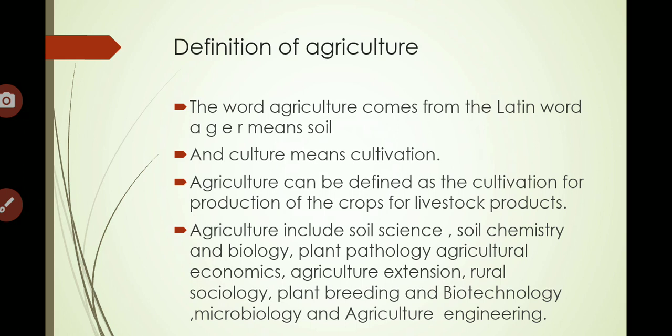Agriculture includes several branches: soil science, soil chemistry, biology, animal husbandry, plant pathology, economics, agricultural economics, agricultural extension, rural sociology, plant breeding and biotechnology, microbiology, and agricultural engineering. These are the branches that relate agronomy to other sciences.